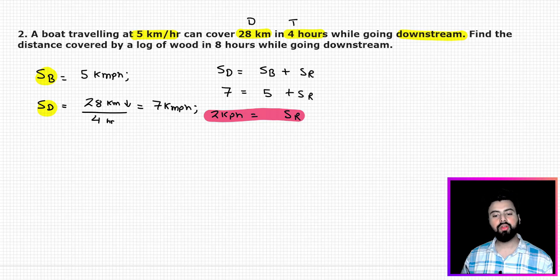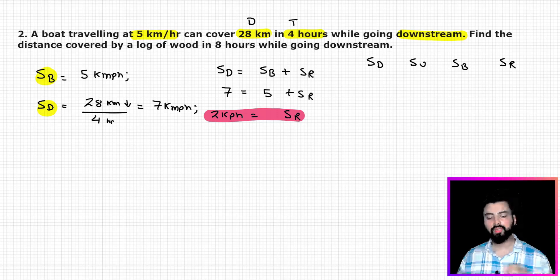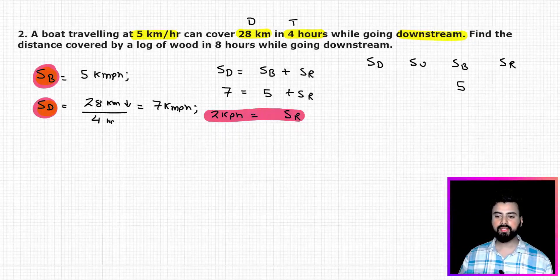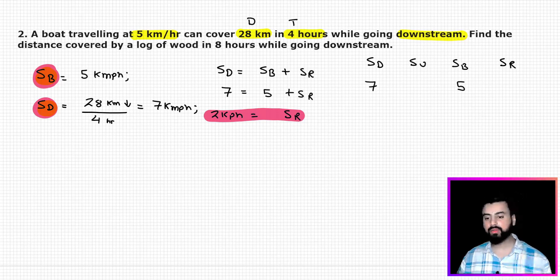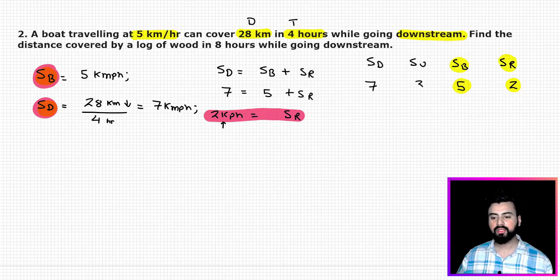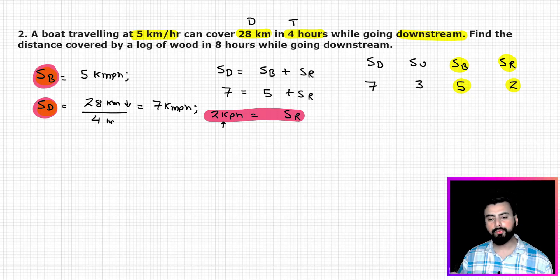If required, we can also find speed upstream: speed of boat minus speed of river = 5 − 2 = 3 km/h. The key idea is that out of the four speeds — speed downstream, upstream, boat, and river — if you know any two, you can calculate the other two very easily. In our case we knew speed of boat (5) and speed downstream (7), and from those we found speed of river (2) and speed upstream (3).